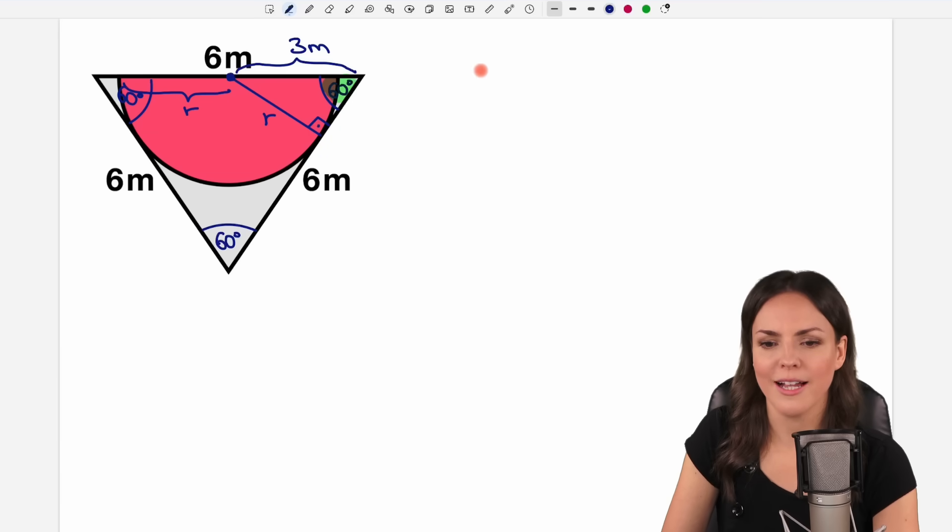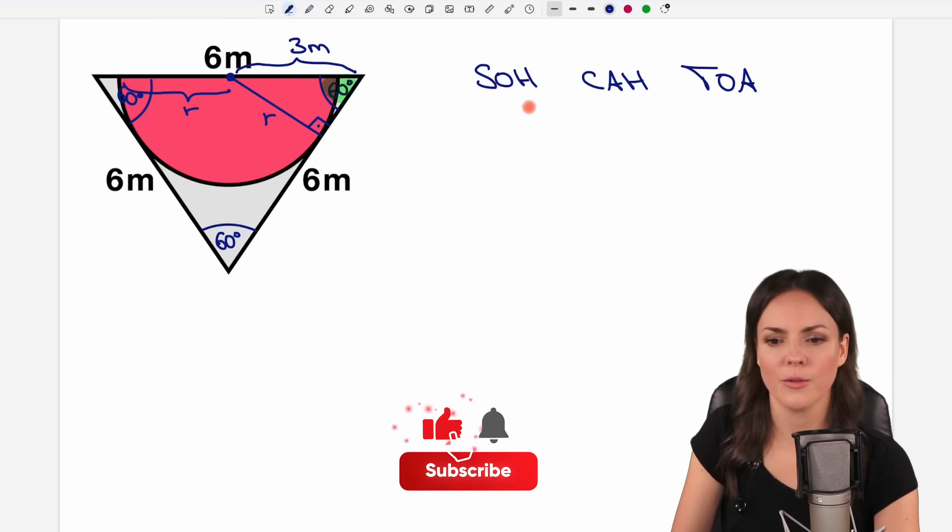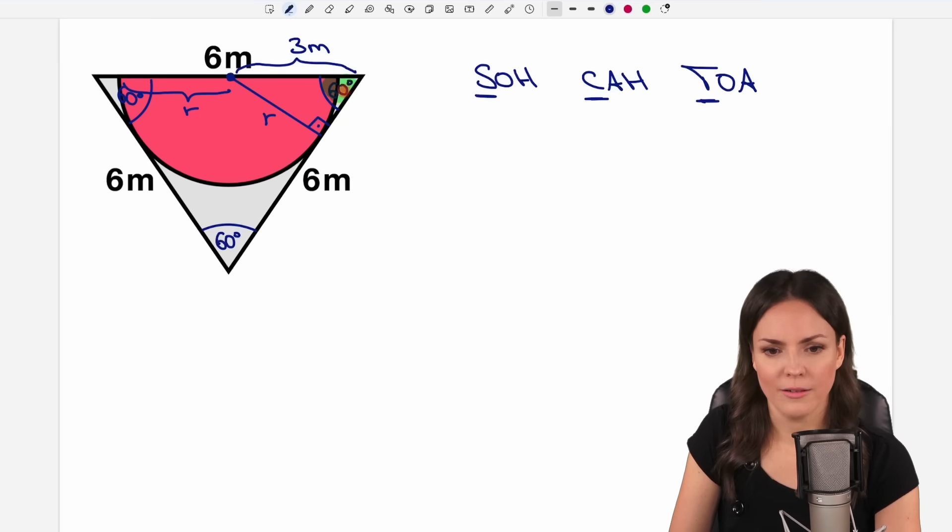So let's take the help of SOHCAHTOA to decide whether we want to use the sine, cosine, or tangent. For our angle we want to find out the opposite side. So opposite is this O here or this O here. So we won't use the cosine.